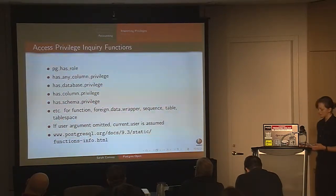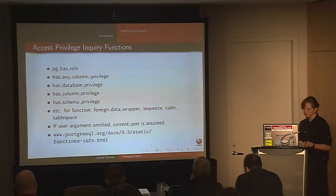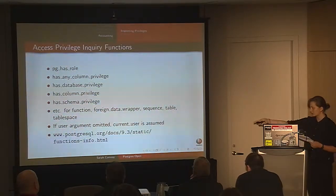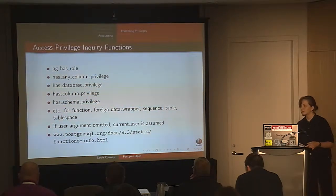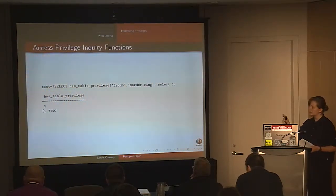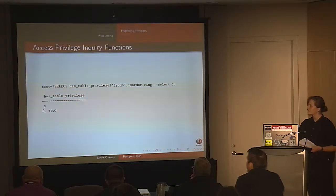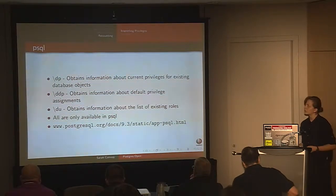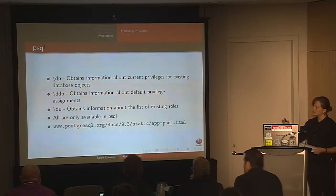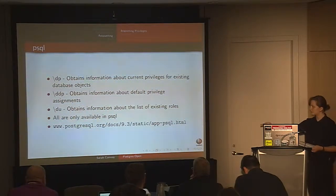Now we're on accounting — inspecting privileges. These are access privilege inquiry functions: pg_has_role, has_any_column_privilege, has_database_privilege, has_column_privilege, and so on for most database objects. If the user argument is omitted, the current user is assumed. For example, to see if Frodo has table privilege on 'wordor.ring', issue that command — and apparently he does. There are also useful PSQL commands for inspecting privileges: \dp, \ddp, and \du, which display information on database objects, default privilege assignments, and existing roles.